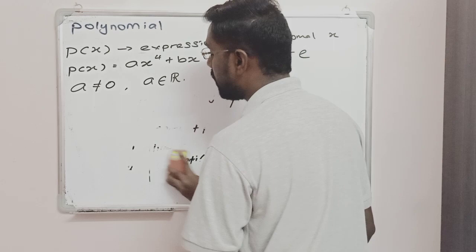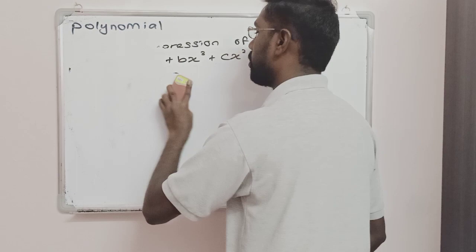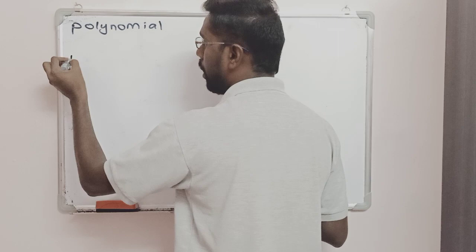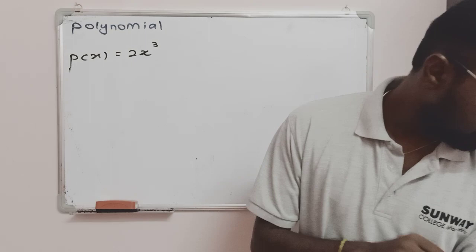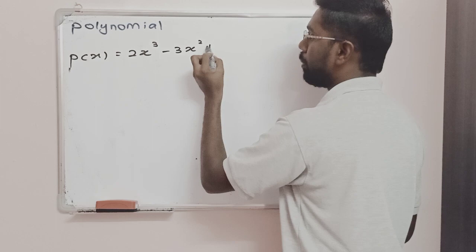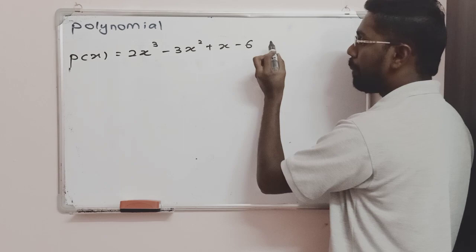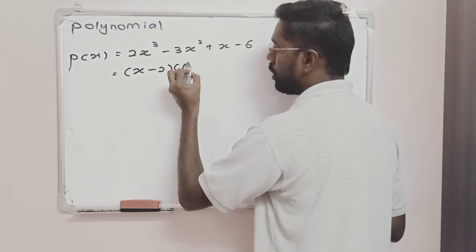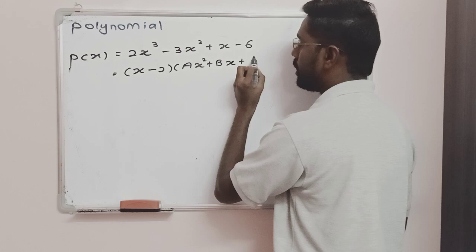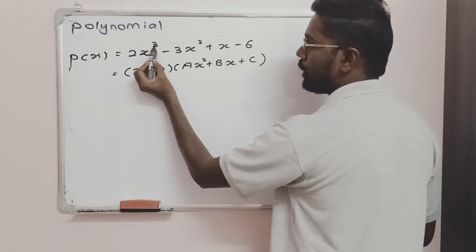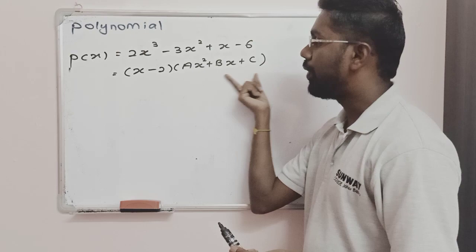Now let's look at how we are going to factorize a polynomial — that is, represent it in factorized form. Let's say p(x) is equal to 2x³ minus 3x² plus x minus 6. I want to represent this in factorized form as (x minus 2)(ax² plus bx plus c).